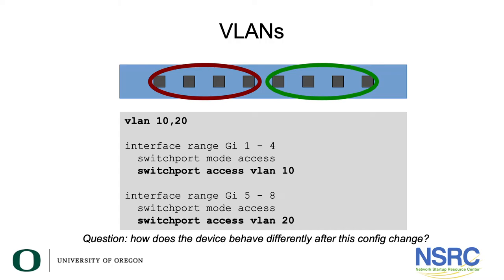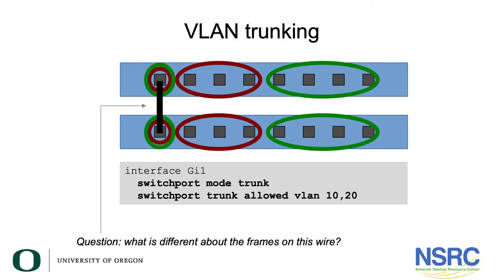How would any device on VLAN 10 talk to any device on VLAN 20? Remember, a VLAN is a completely separate virtual LAN from any other virtual LAN on an Ethernet device. We could introduce VLAN trunking — a way of connecting two switches together so that VLAN 10 on one switch can connect to VLAN 10 on another switch, and VLAN 20 to VLAN 20.